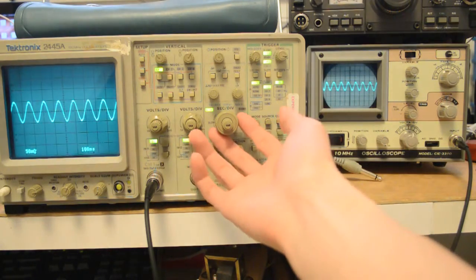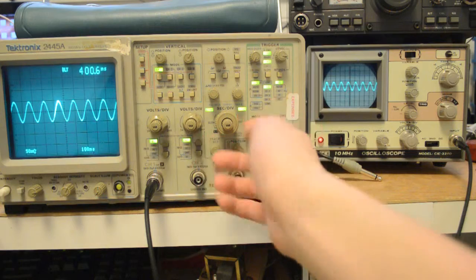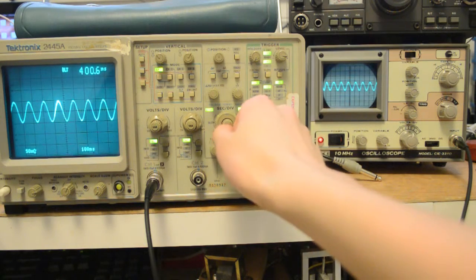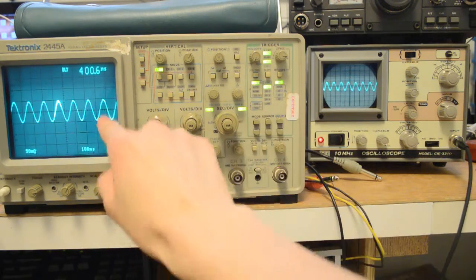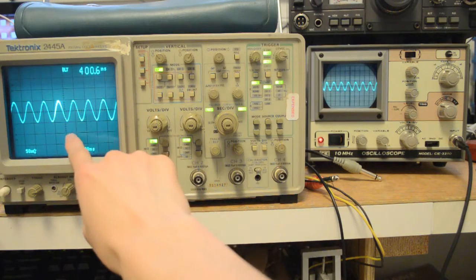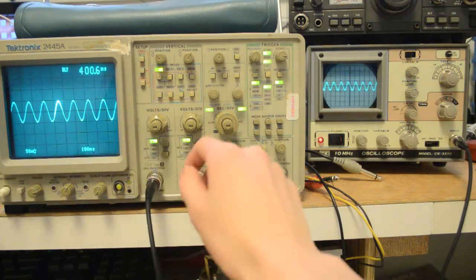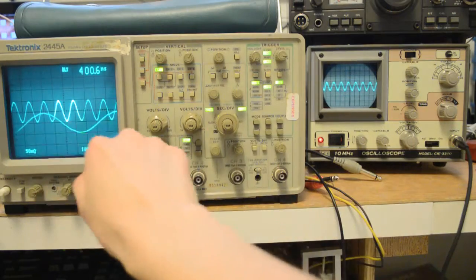We also have a mode B, or B sweep, thing going on here. Where you can view a small portion of the wave, and you can have that magnified off. Like that.